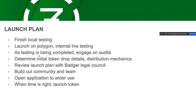Launch plan: we're going to finish local testing, launch on Polygon. As testing completes locally, we're going to engage to get some audits done. Then what we really want the community to run with is determining the initial token drop details and distribution mechanics. We also want to make sure we're not running afoul of any regulations, so we'll talk to the Badger Legal Council, build out the community and team, and open the application to wider use. We'd expect the application to be available for people to use before we do the token drop DAO component.